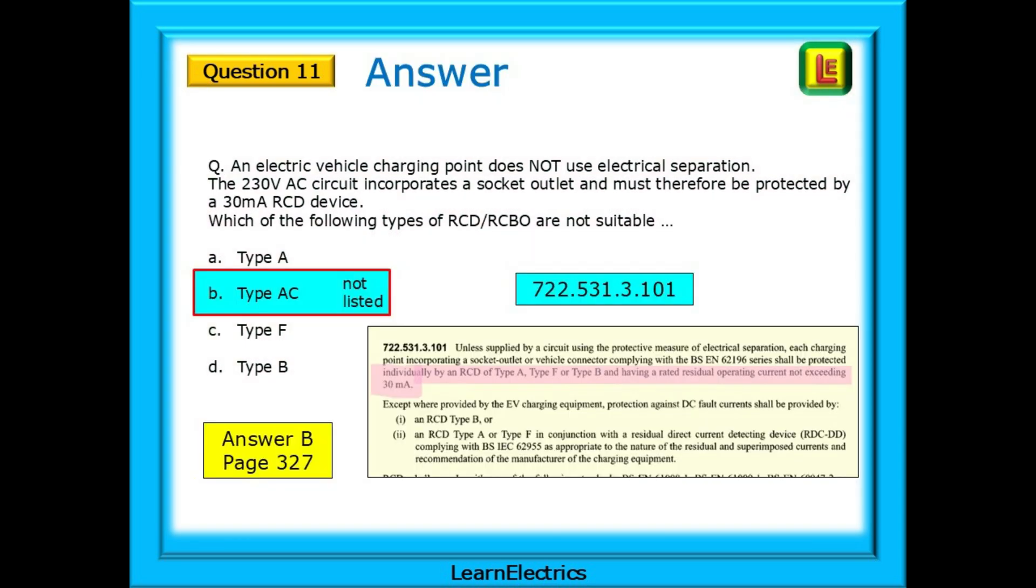Finding Regulation 722.531.3.101 on page 327, we can see that type AC devices are not listed. The answer choice, by elimination, is therefore B.